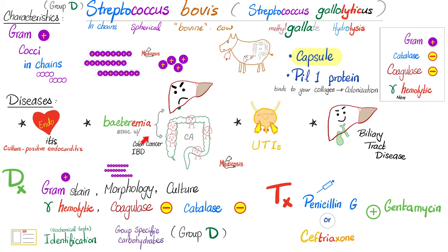The other name for Streptococcus bovis is Streptococcus gallolyticus, because it causes hydrolysis of methyl gallate. Diseases: endocarditis, bacteremia, UTIs, and biliary tract disease. Diagnosis: gram stain and culture. It is gamma hemolytic, coagulase negative, and catalase negative. You can identify it by looking for the group D carbohydrate. Treatment is penicillin plus gentamicin, because this is good old endocarditis.